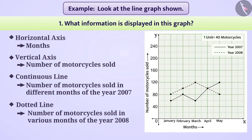The graph shown in this way compares the number of motorcycles sold in various months of the year 2007 and the year 2008.